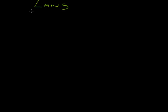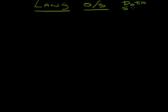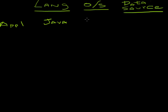Anytime we develop an application there are usually three main parts: the language we decide to write it in, the operating system we're going to deploy it on, and the data source. In most organizations the applications are completely different. So let's say application one is developed in Java, it's deployed on a Linux system, and it uses Oracle as its data source.